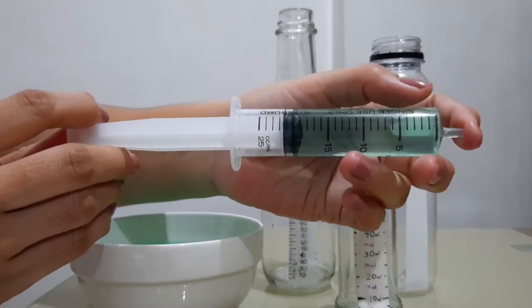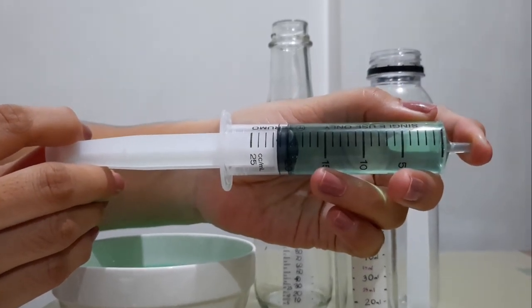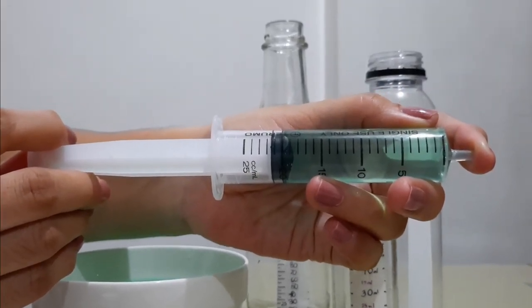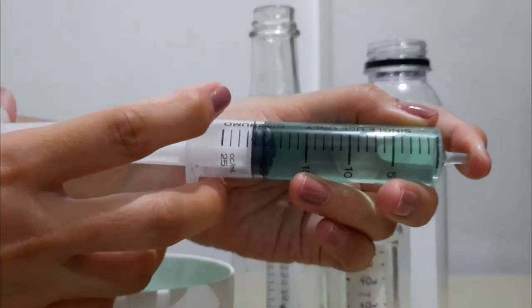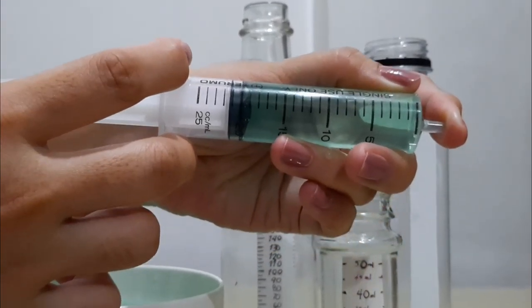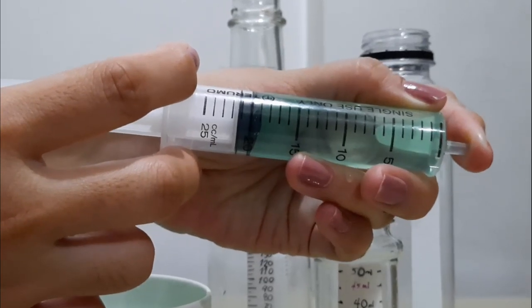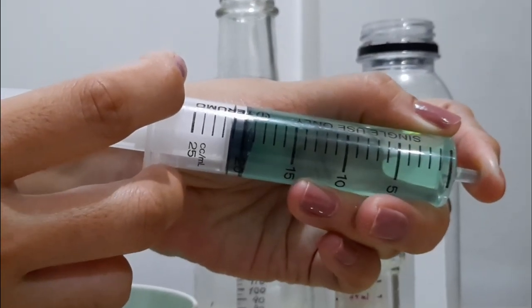Look closely as I try to push the plunger of the syringe with my thumb while I cover the nozzle with my forefinger. Observe if the water inside can be squeezed easily and if the volume of the water changes.